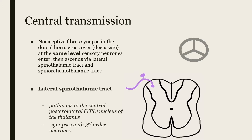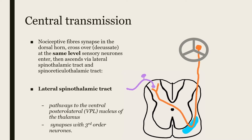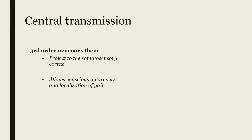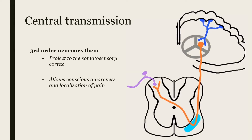The pathway of the lateral spinothalamic tract is outlined here. The lateral spinothalamic tract ascends to the ventral posterior lateral (VPL) nucleus of the thalamus, where the second-order neuron synapses with third-order neurons. The third-order neurons of the lateral spinothalamic tract then project to the somatosensory cortex, allowing conscious awareness and localization of the pain.